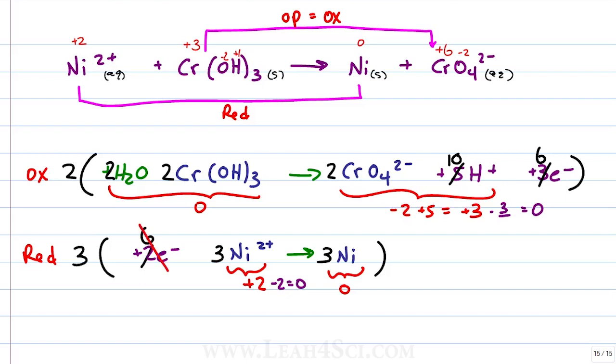Now that we have 6 electrons in the reactants on reduction and 6 electrons in the products on oxidation, they can cancel out.